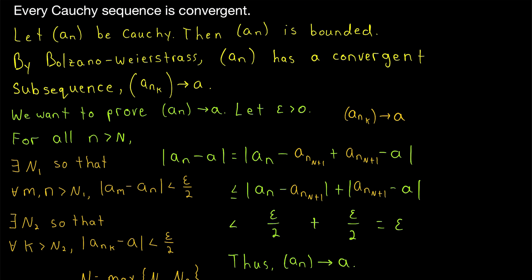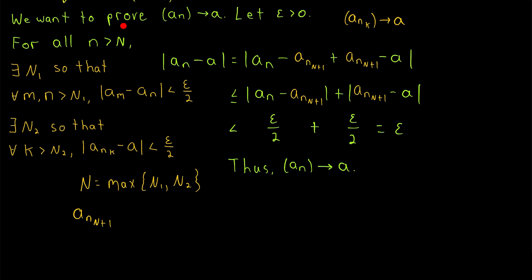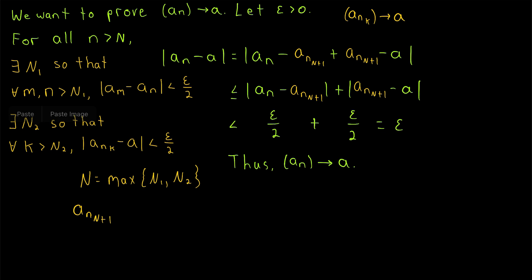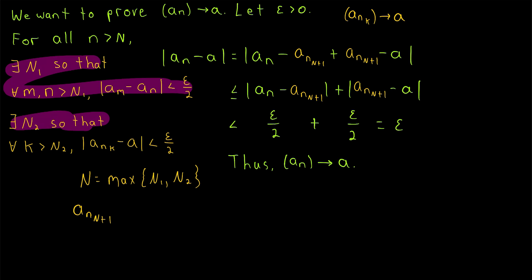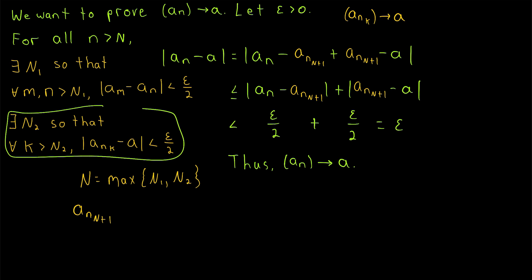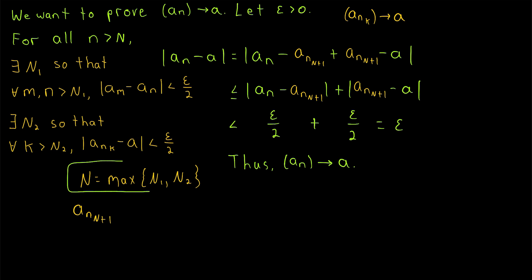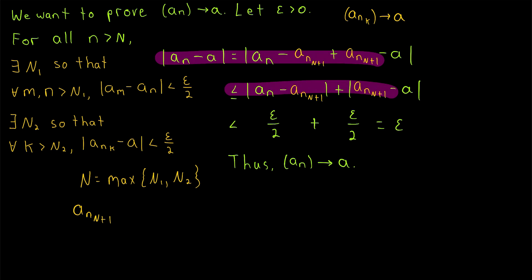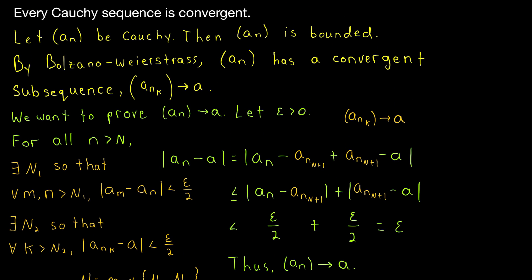The arrangement of a formal proof would be roughly like this: start by stating AN is Cauchy, then optionally state the goal of convergence to give the reader direction. Take epsilon greater than zero, then insert the remarks establishing that N1 exists because AN is Cauchy, and N2 exists because subsequence ANK converges to A. Set big N equal to the maximum and consider ANₙ₊₁. For all terms of AN after the big Nth term, the chain of inequalities follows. This proves every Cauchy sequence is convergent, and combined with our proof that every convergent sequence is Cauchy, we have established that a sequence is Cauchy if and only if it converges.